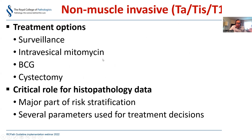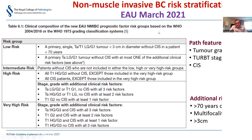In contrast, for non-muscle invasive tumors - Ta, Tis, and T1 - treatment options are much wider, ranging from surveillance to intravesical mitomycin, BCG, and cystectomy. The pathologist plays a critical role because pathology data forms a major part of risk stratification. The latest EAU risk stratification table divides patients into low, intermediate, high, and very high risk groups, with different management protocols recommended for each, based on pathologic features like tumor grade, TURBT category, and presence or absence of CIS.